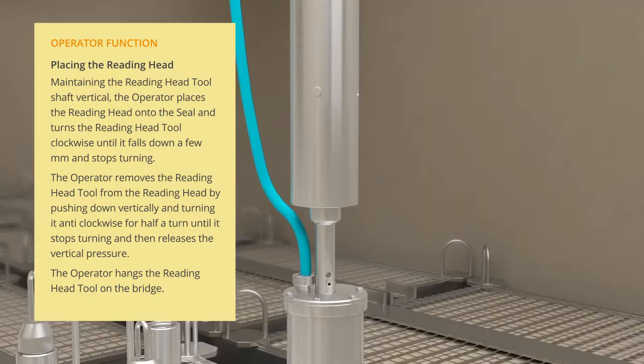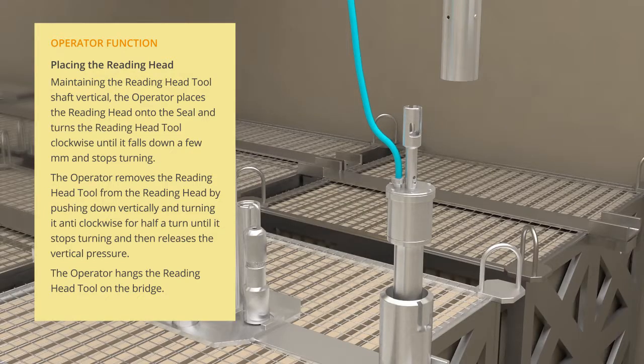The operator removes the reading head tool from the reading head by pushing down vertically and turning it anti-clockwise for half a turn until it stops turning, then releases the vertical pressure. The operator can now hang the reading head tool on the bridge.